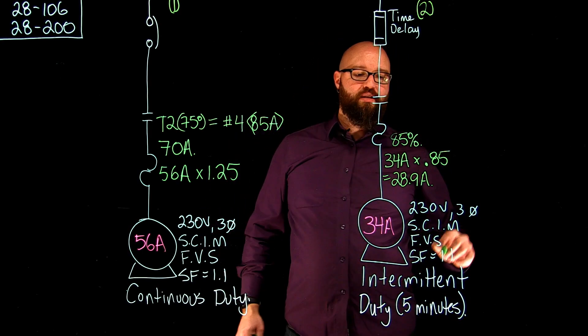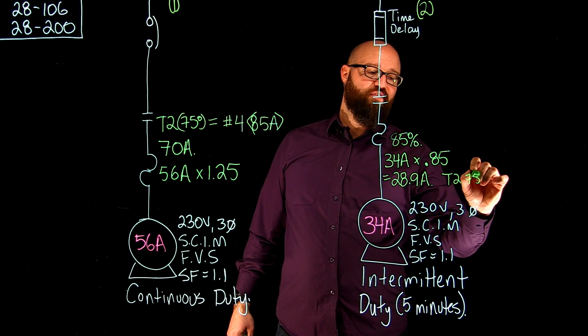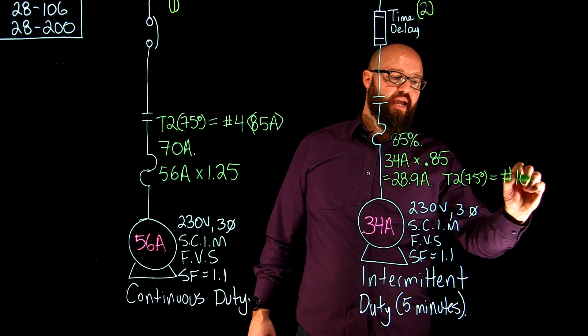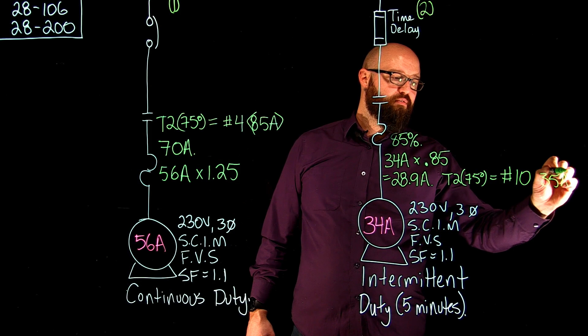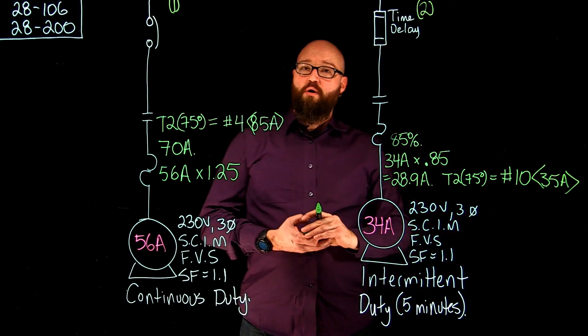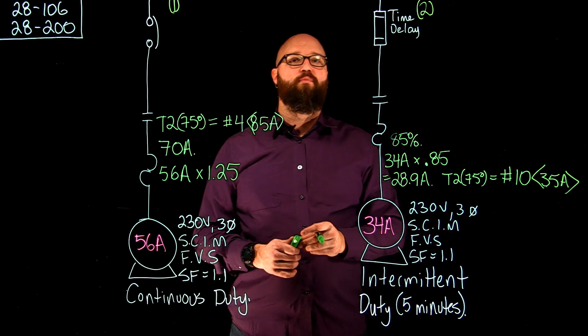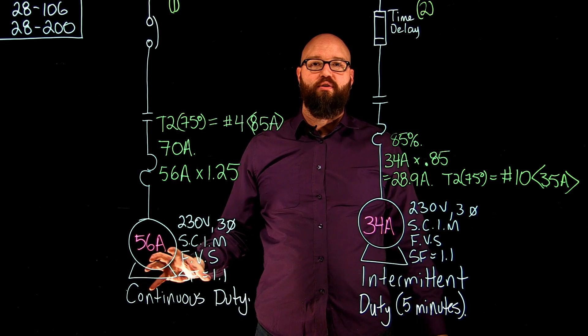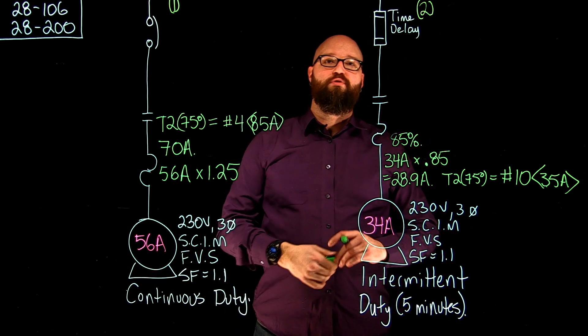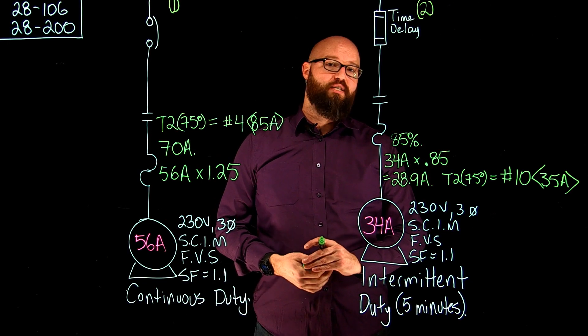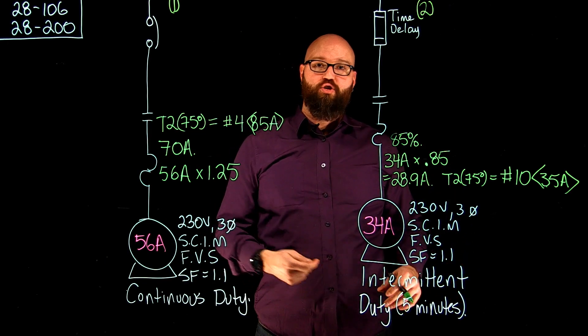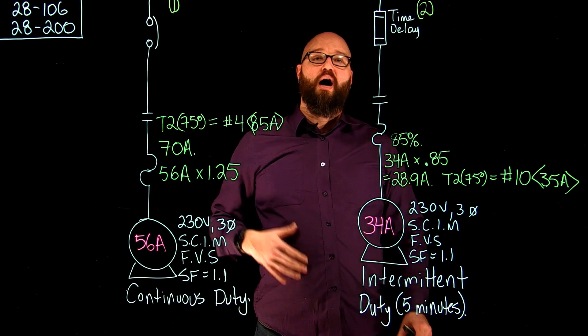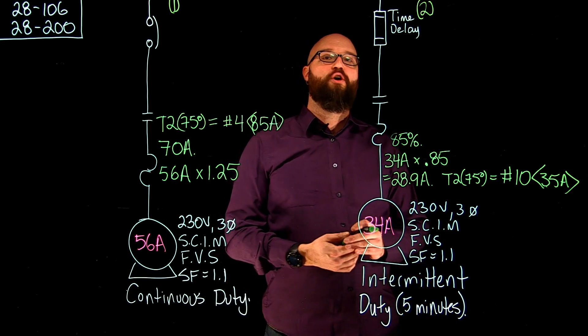So we're going to take that 28.9 amps, we're going to go table two, 75 degree column again, and we're going to buy a number 10 gauge, good for 35 amps. So we've sized both of our branch circuit conductors for these individual motors. 28-106 sub-rule one deals with continuous duty rated motors. 28-106 sub-rule two deals with non-continuous rated motors. And this is just one example. There could be a short time duty, a varying duty, different time increments that they give me. I would still just reference table 27 for anything that's non-continuous.